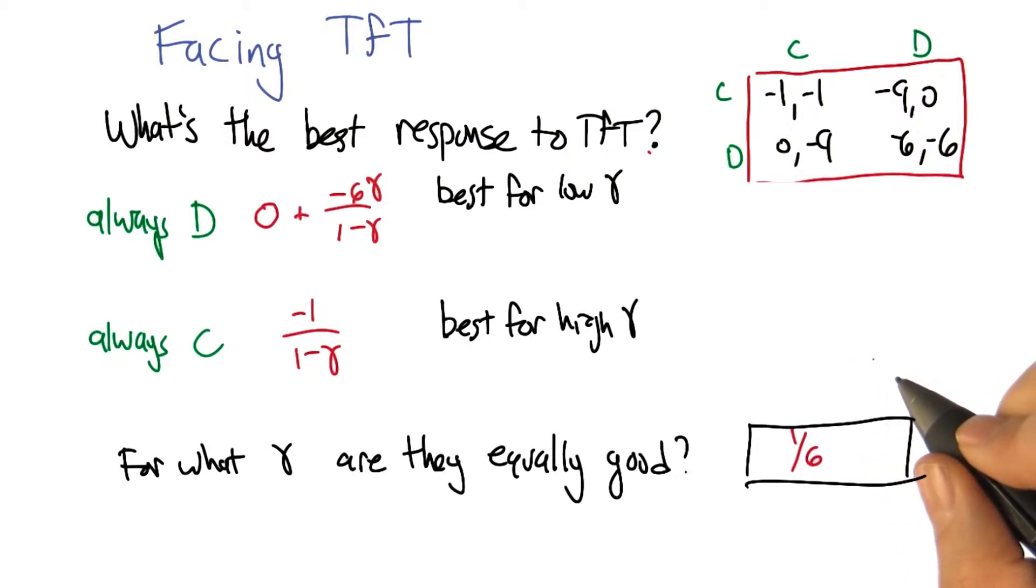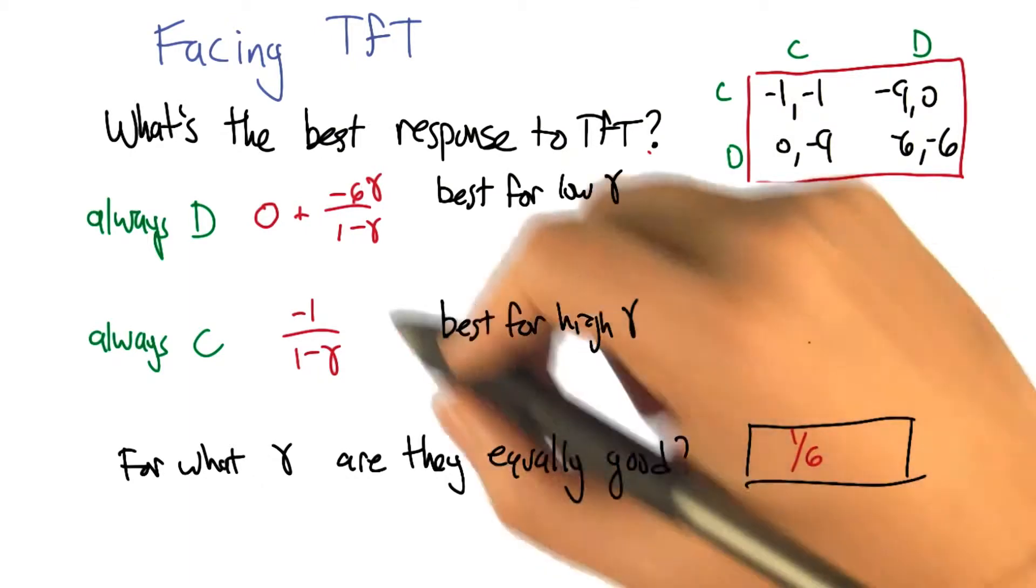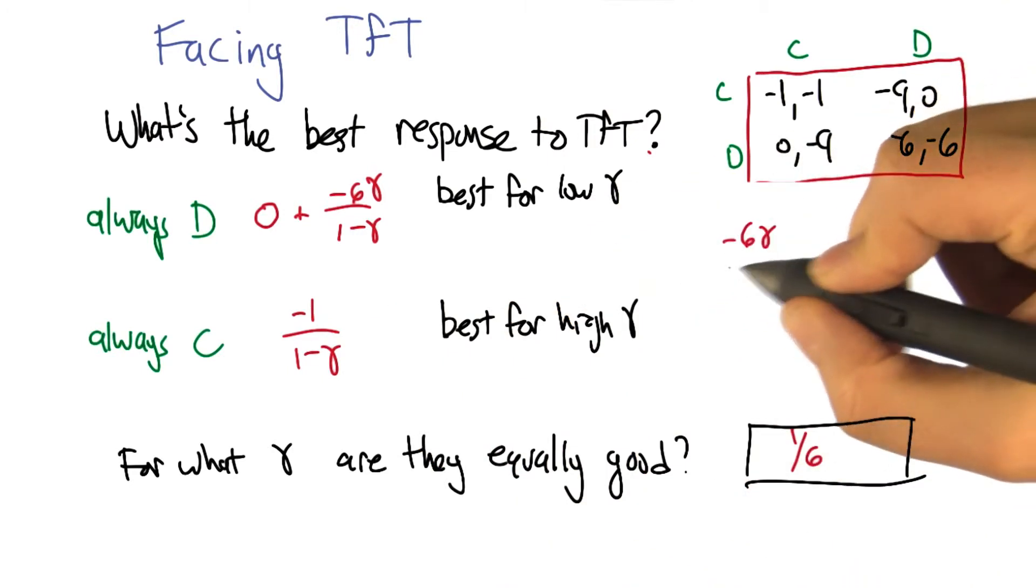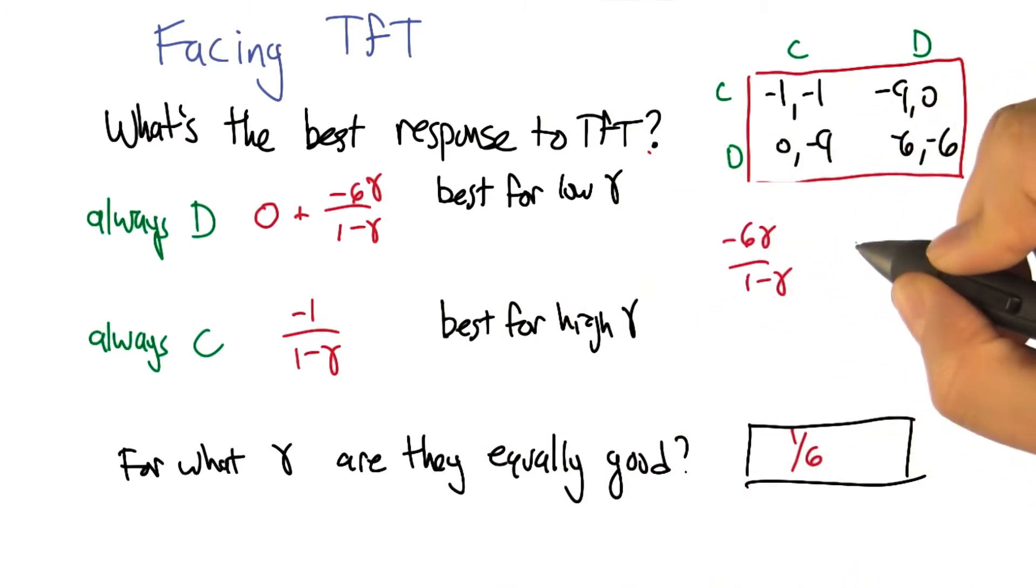But here's what I actually did while I was thinking about it. You said, when are they equally good? Well, if you always defect, you get minus 6 gamma over 1 minus gamma. And if you always cooperate, you get minus 1 over 1 minus gamma. So they're equally good when those two values are the same.